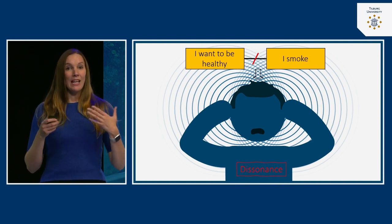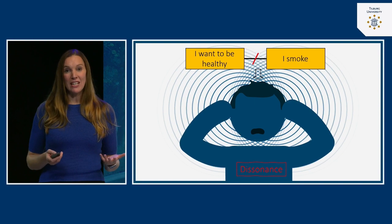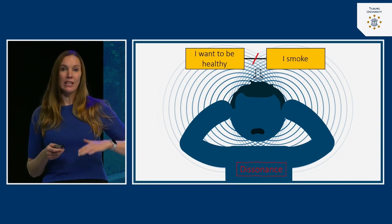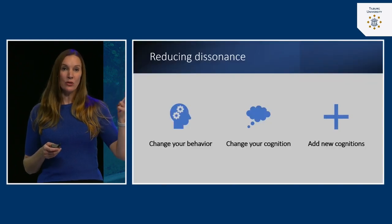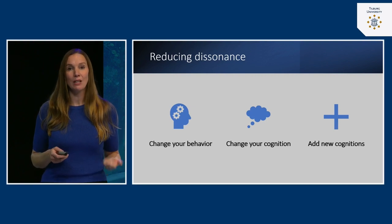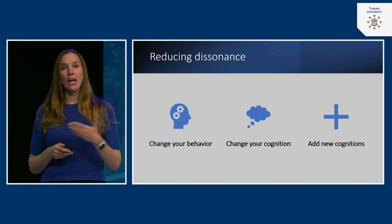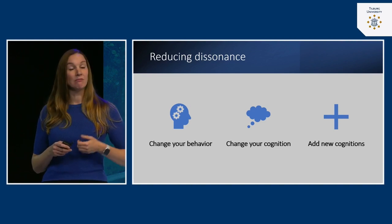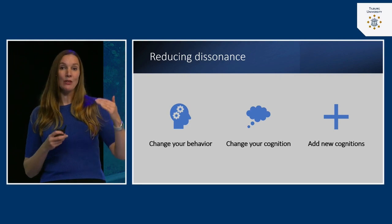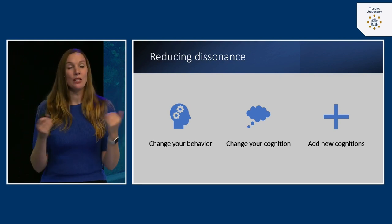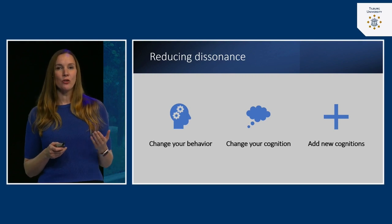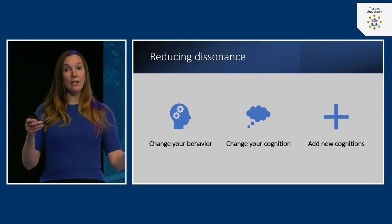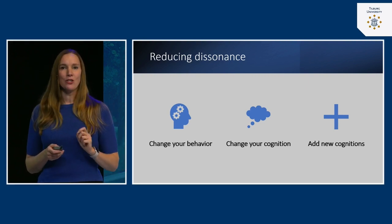If we experience this negative state, we want to get rid of it. There are three major ways to reduce the feeling of dissonance. The first is to change your behavior — make sure your behavior is in line with your attitude or core value: stop taking planes, stop smoking. The second is to change your cognition — change your ideas or values. For example: 'I don't care about the environment anymore, so I can take all the planes I want.'